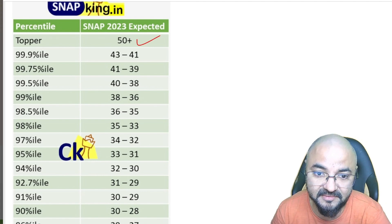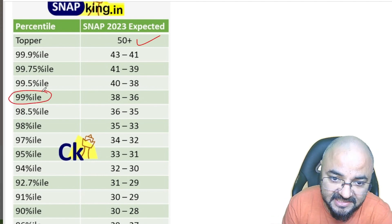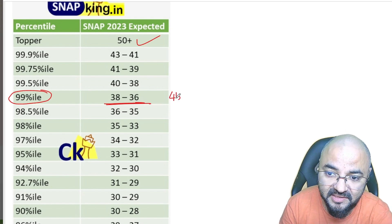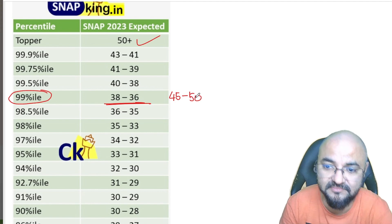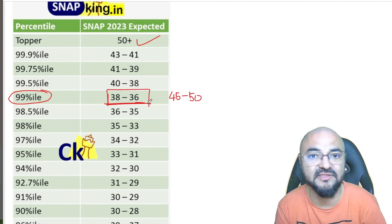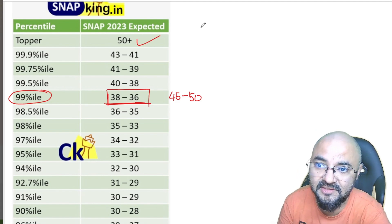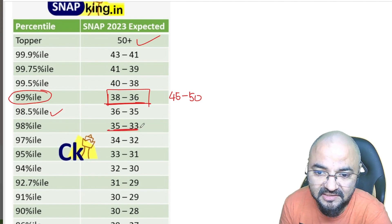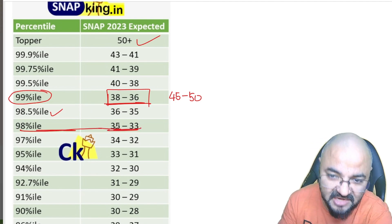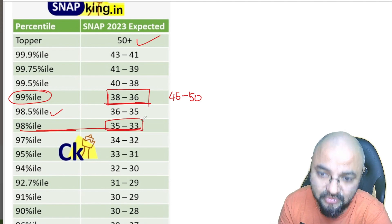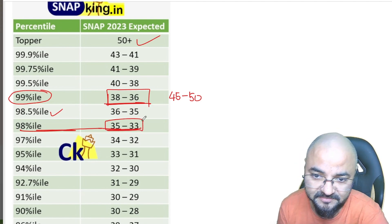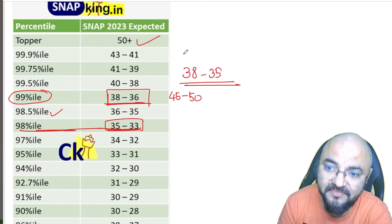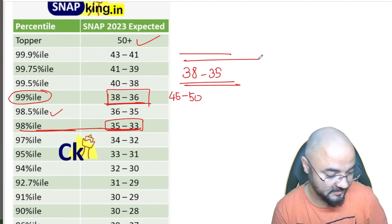Our first target is the 99 percentile, which will be around 36 to 38 marks. The attempt needs to be around 40 to 50 — only when you attempt 40 to 50 will your score reach that level for 99 percentile, or at least 98.5 percentile. To just cross the minimum cutoff, you need a score of 33 to 35 marks. So if you ask me about the cutoff, I think it will be between 35 to 38 marks.